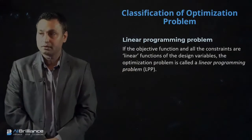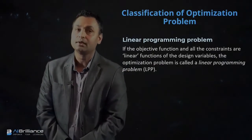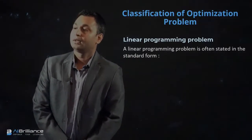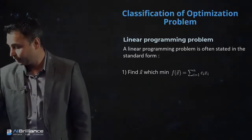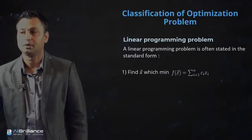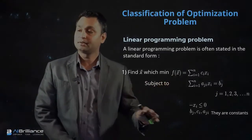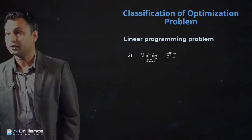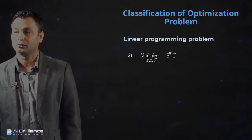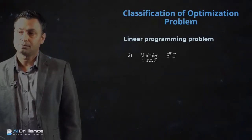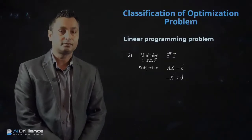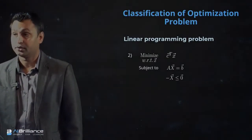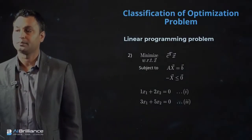So, what are linear programming problems? If the objective function and all the constraints are linear, then the optimization problem is known as a linear programming problem. The optimization problem is stated in the standard form, which is: minimize f(x) equals the sum of ci times xi, subject to the constraints — the index way of writing it. The vectorized version is: minimize c-transpose times x, subject to Ax equals b and minus x is less than or equal to zero. Those are the two notations typically used for linear programming problems.